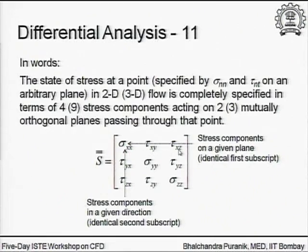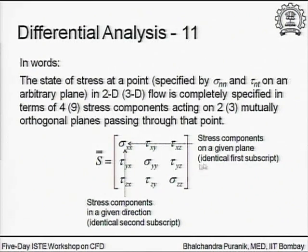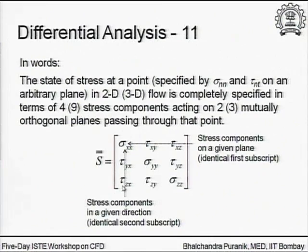The normal stresses are along the diagonal and the off-diagonal elements are the shear stresses. Along any particular row, all stress components share the same first subscript — they act on the same plane, since the first subscript gives the direction of the normal to that plane. Along any particular column, the second subscript is common, giving the direction of the stress component itself.